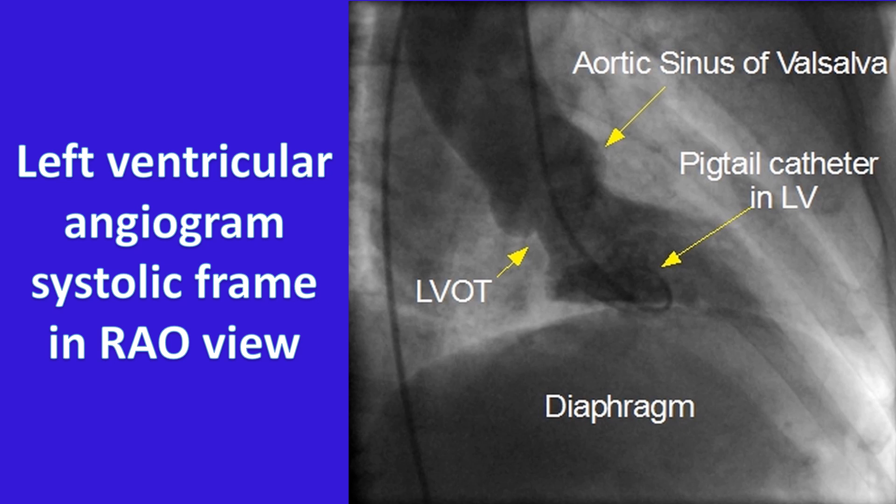The pigtail should be in the cavity and not in the inflow or outflow region. If it is in the inflow region, it can produce mitral regurgitation. A ventricular ectopy induced by the catheter can also produce a whiff of mitral regurgitation.